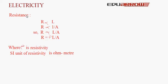Let us discuss on what factors the resistance of a given metal wire depends. For a given conductor, resistance is directly proportional to the length of the conductor, and inversely proportional to the area of cross-section of the conductor. Combining these two equations, resistance is directly proportional to the length upon the area of cross-section.